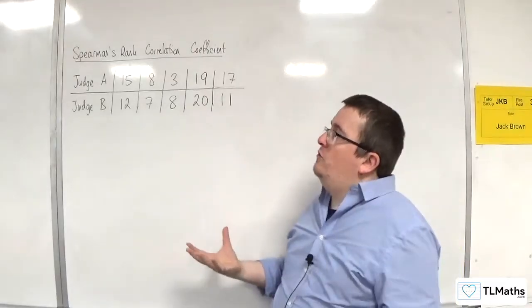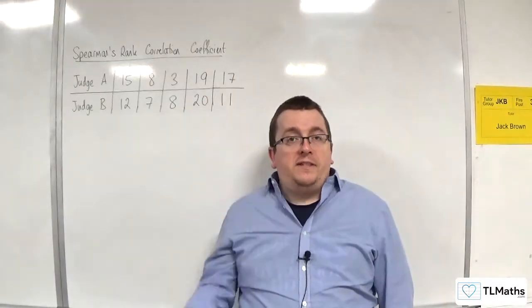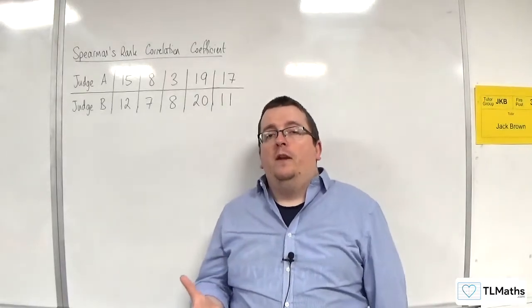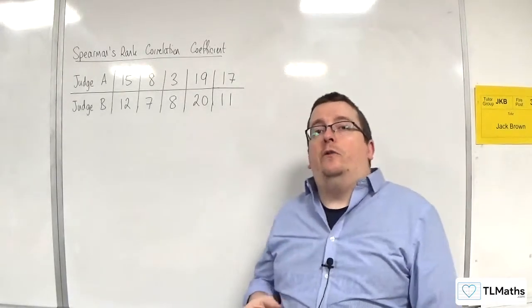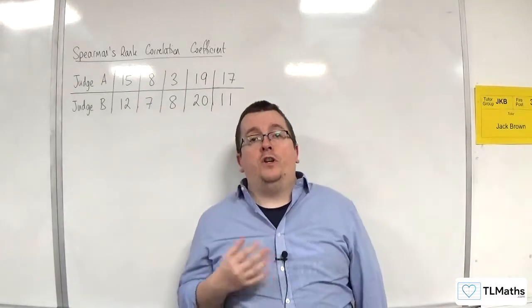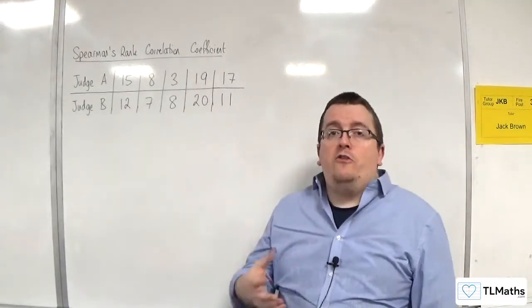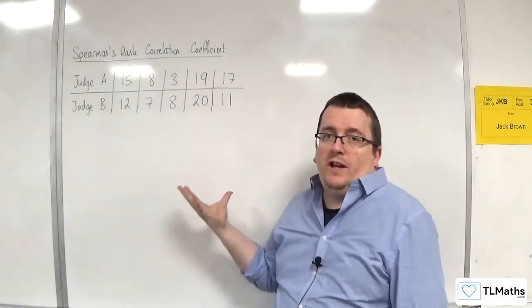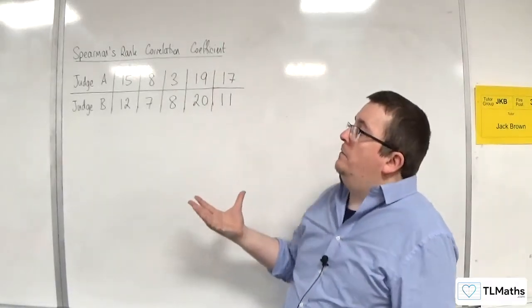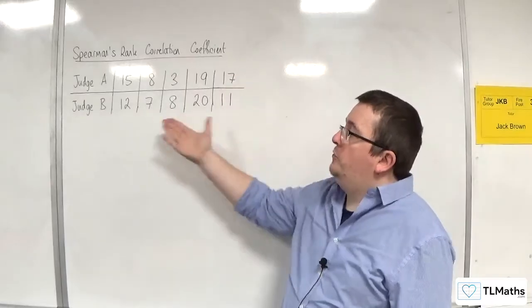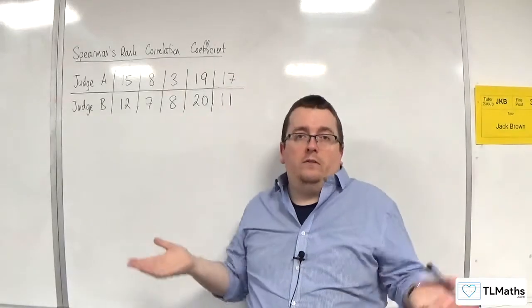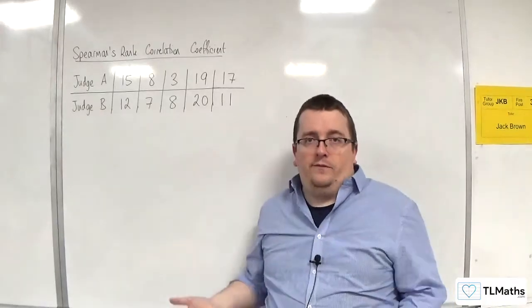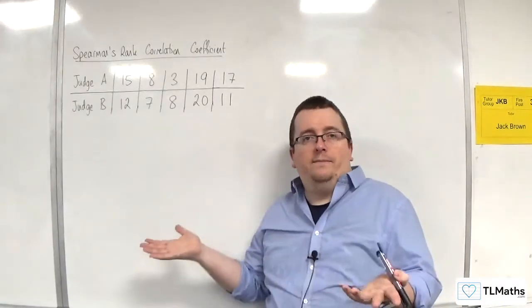So how do we get around that? Well, instead, we use Spearman's rank correlation coefficient, which can deal with three scenarios that the product moment correlation coefficient can't. The first scenario is it can deal with subjective data. This one is subjective, because Judge A's scores and Judge B's scores are based on what they like. So it is completely subjective, giving them a score for a talent out of 20.